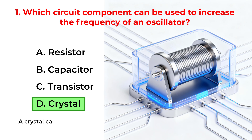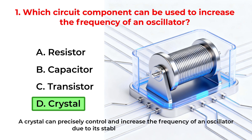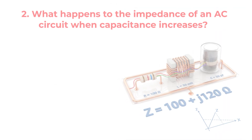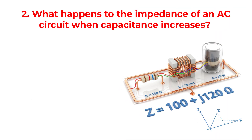A crystal can precisely control and increase the frequency of an oscillator due to its stable resonant properties. What happens to the impedance of an AC circuit when capacitance increases?